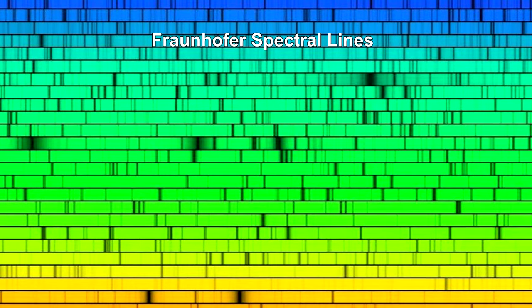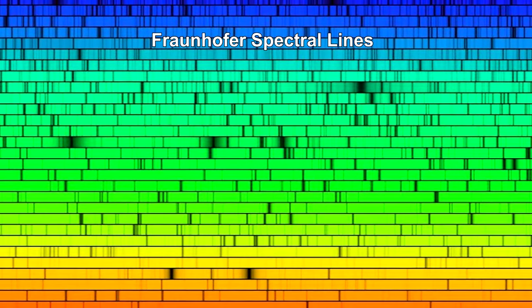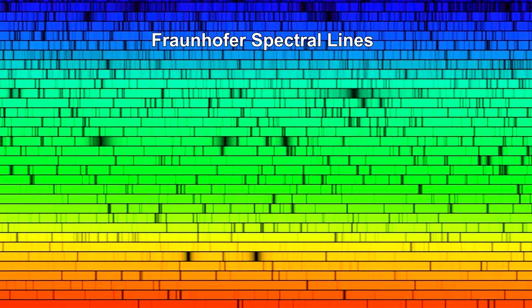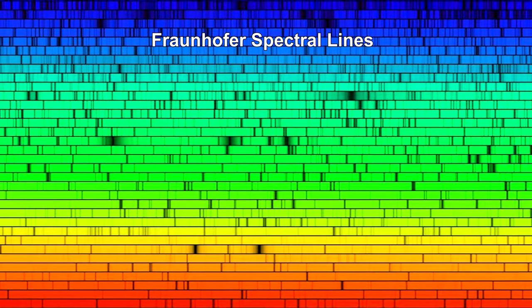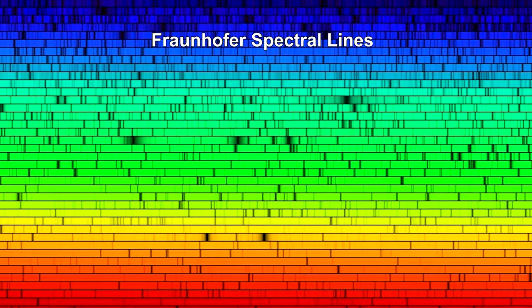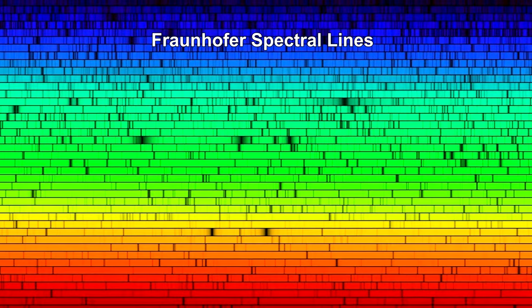You'll recall from our How Far Away Is It segment on Distant Stars that the light spectrum from stars was covered by thousands of dark lines called Fraunhofer lines or spectral lines. Although these lines had been studied for over a hundred years, no one understood what they were.